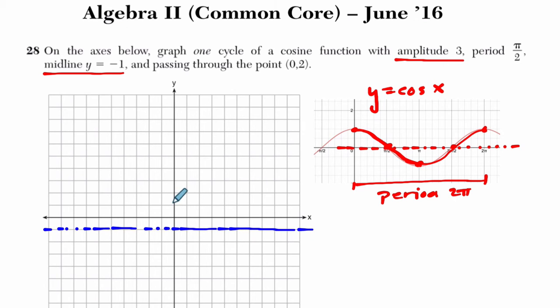And we go 3 above here and 3 below, 1, 2, 3 and negative 4 here. Those would be the peaks and valleys of the cosine function. And we know it passes the point (0, 2). So we have to include a cycle that passes this point. The amplitude is 3, so we have 1, 2, 3 above and below. And the period is pi over 2.